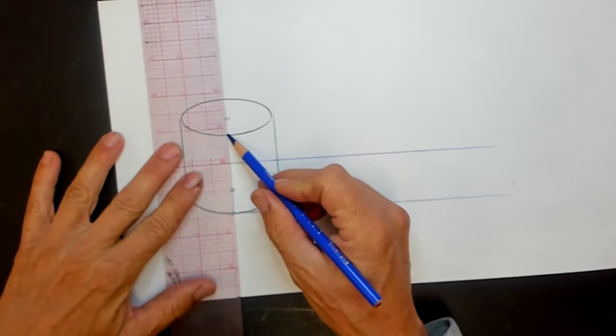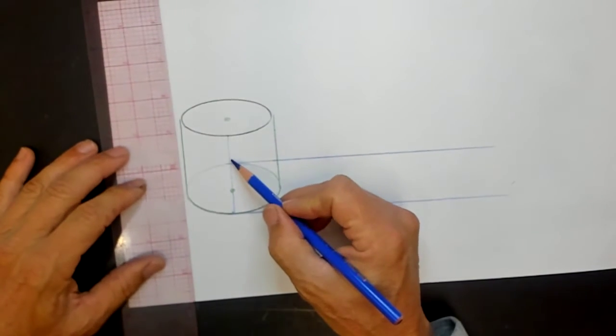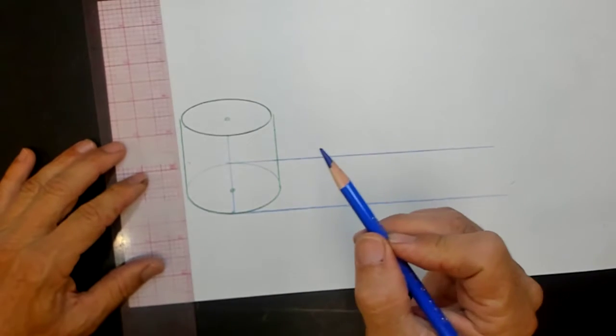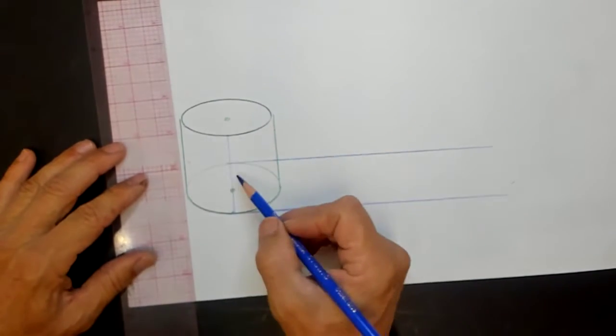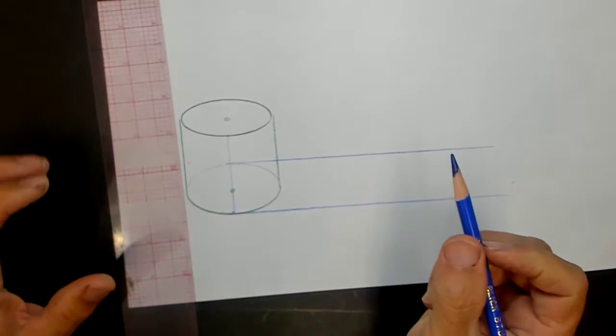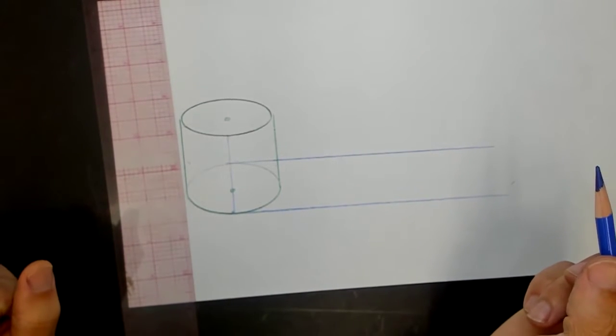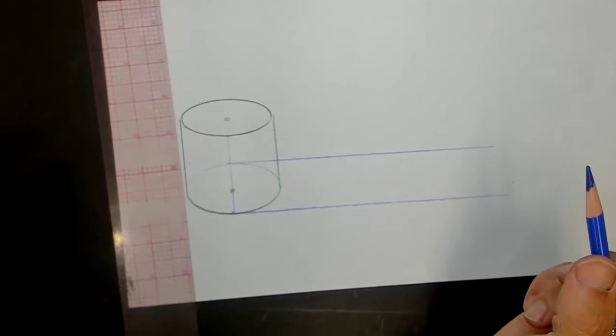But we don't do core shadows when plotting perspective shadows. It is just a line. Things are either in light or they're in shadow. We don't do that little subtle transition that you do in your artwork. When you're plotting out shadows in perspective, everything is very crisp lines.